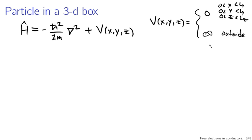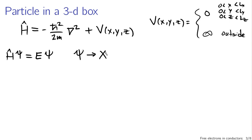This is essentially identical to our one-dimensional particle in a box — we just have more dimensions to work with, and the solution procedure is very similar. The Schrödinger equation we're working with is the time-independent Schrödinger equation, H psi equals E psi. If we make the separation of variables assumption that psi is given by some function of x multiplied by some function of y multiplied by some function of z, what you end up with is three separate independent one-dimensional infinite square well potentials — one in x, one in y, and one in z.